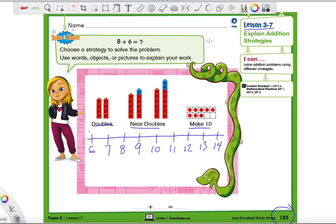Hello everybody, Mr. Montgomery again. Today we're on lesson 3-7, and we're on page 133. Let me write it a little bit bigger for you. 133, we have 1 in our 100th place, we have 3 tens, and we have 3 ones.